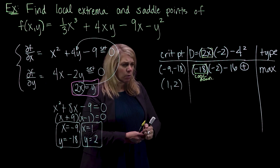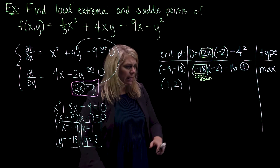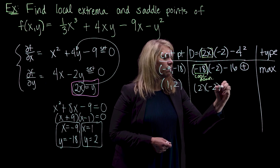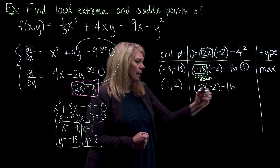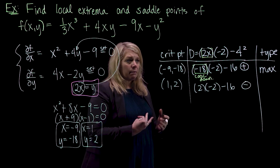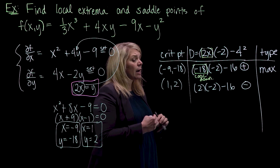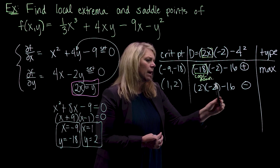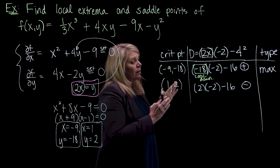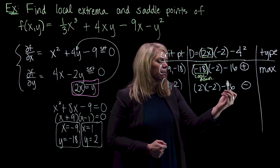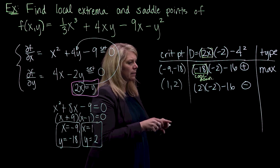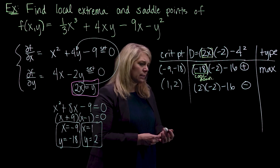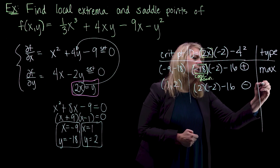At the point (1, 2), I'll plug x equals 1 into the D function: 2 times negative 2 minus 16. This D function is negative. What that means is that I have different concavity going on in different directions. The mixed second partial derivative picks up what happens in directions other than strictly x or strictly y. Because this D function is negative, it tells me I have different things going on in different directions, so we have a saddle point.